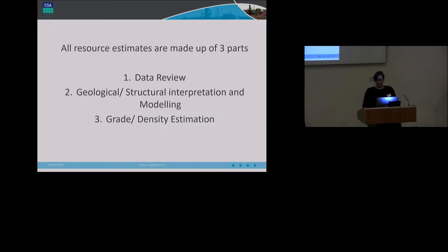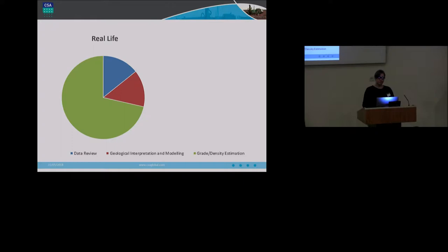It's a bit of a simplification, but resource estimation workflow is often composed of three stages: a data review, geological and structural modelling, and then grade estimation. Typically, the division of labour looks something like this, where a limited amount of time is spent understanding the data that's collected and using it to generate a robust geological model, with the majority of the time spent on sometimes complex geostatistics to manage difficult data.